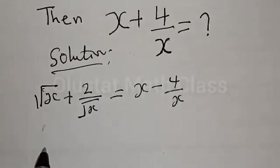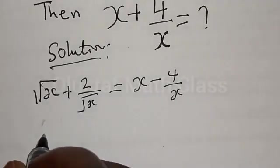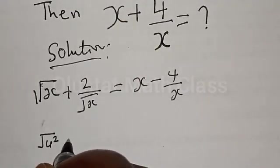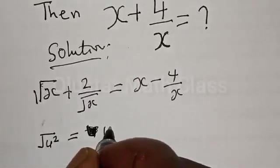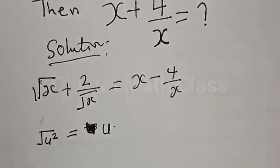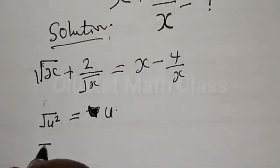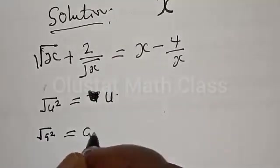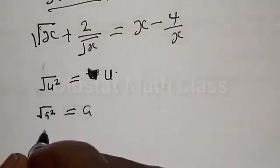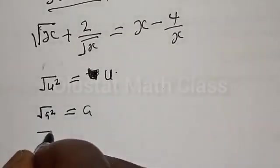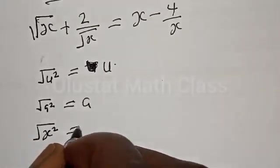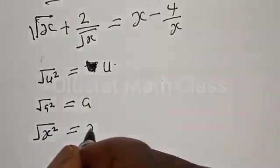We know that square root of u squared is the same as u. Also, square root of a squared is equal to a. Then if square root of a squared equals x, therefore anywhere you see x in this given equation, you substitute it with square root of a squared.